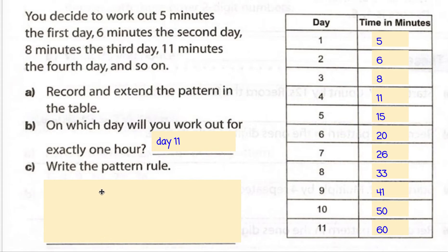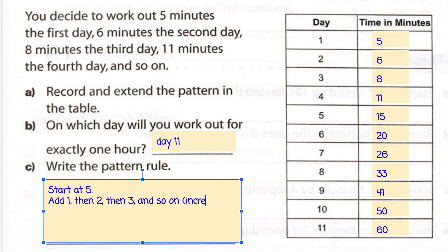All right. Then it says to write the pattern rule. Now remember pattern rules have two parts. We always have to say what we start with. This one's easy. They told us what to start with. On day one, we started at five. And then we have to say how it's changing each time. Now we can't say add one each time, because that didn't happen. We can't say add two each time. That didn't happen. So the way we're going to say that is we're going to say add one, then two, then three, and so on. Then I'm going to put in brackets, increase by one each time.